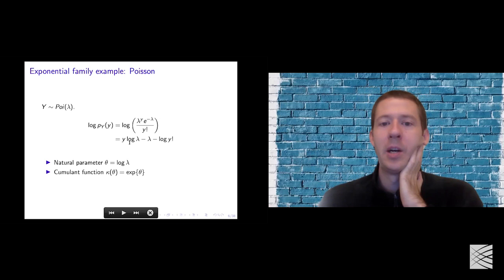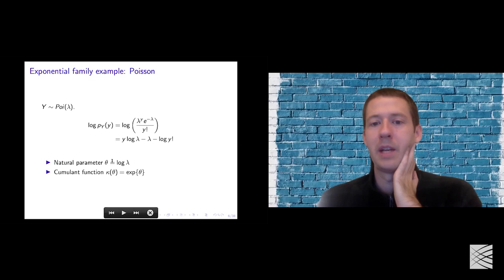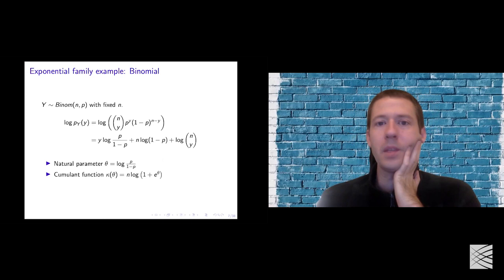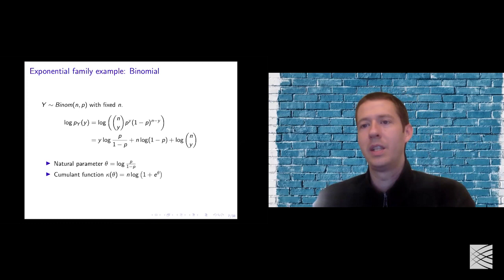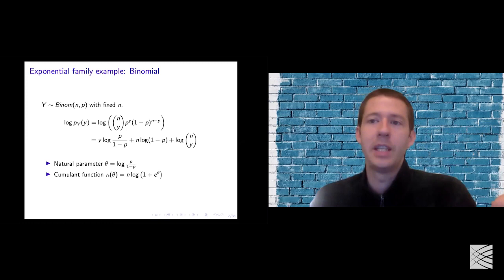With the Poisson distribution, we look at where the data y appears and what's multiplied by y. Log of lambda equals the natural parameter — you can invert and get lambda as a function of theta, then identify the cumulant function. The cumulant function must be a function of the natural parameter, not lambda. For the binomial distribution, the natural parameter is the log odds. For the Gaussian, assuming sigma squared is fixed, the natural parameter is mu over sigma squared. You can go through this process of rewriting the pmf to identify these parameters and check whether something is actually an exponential family.